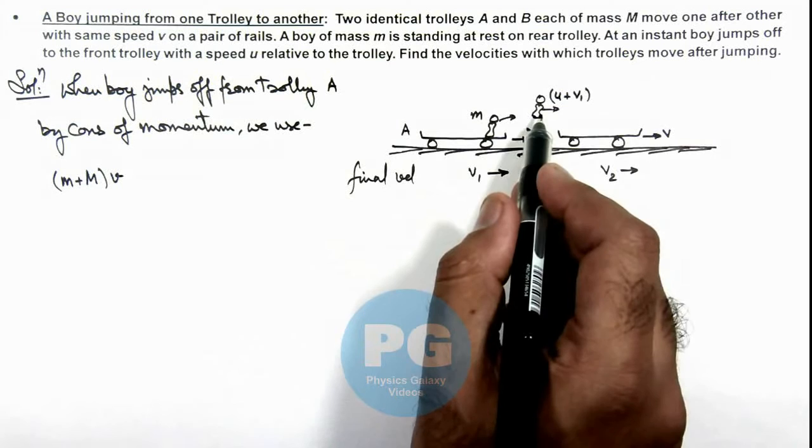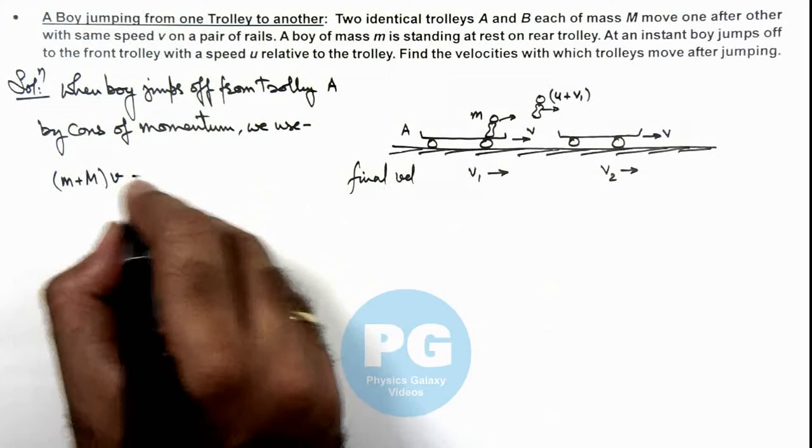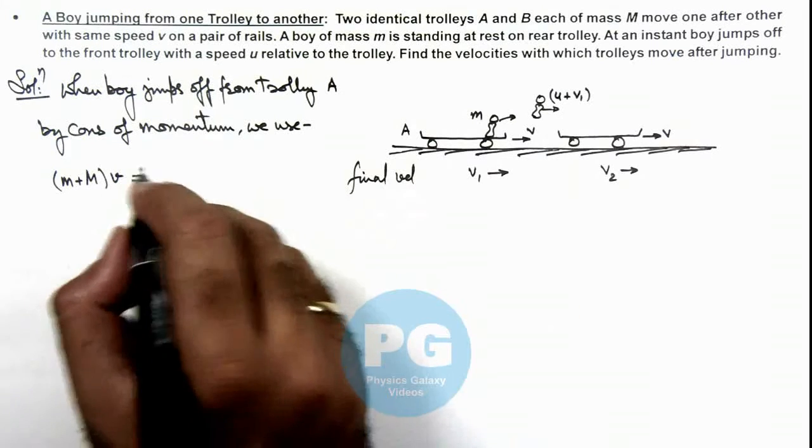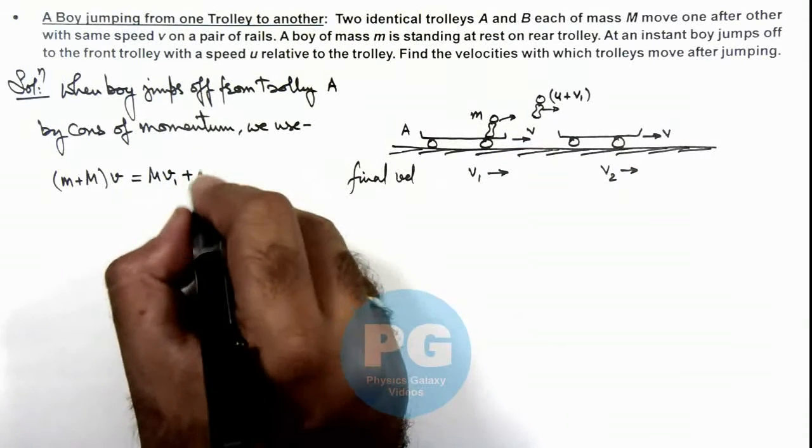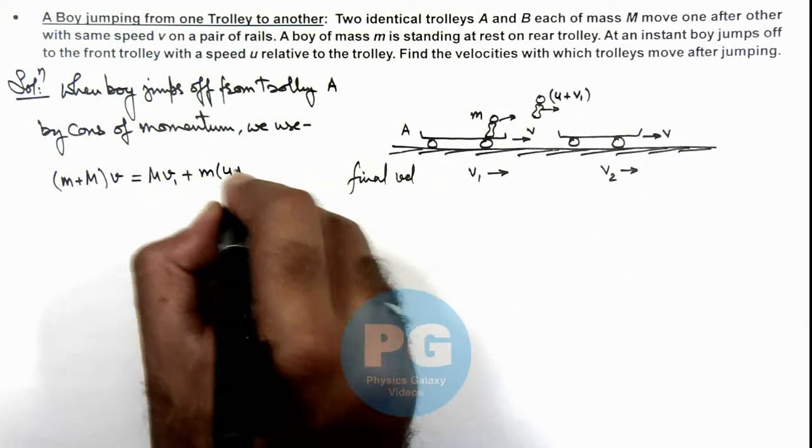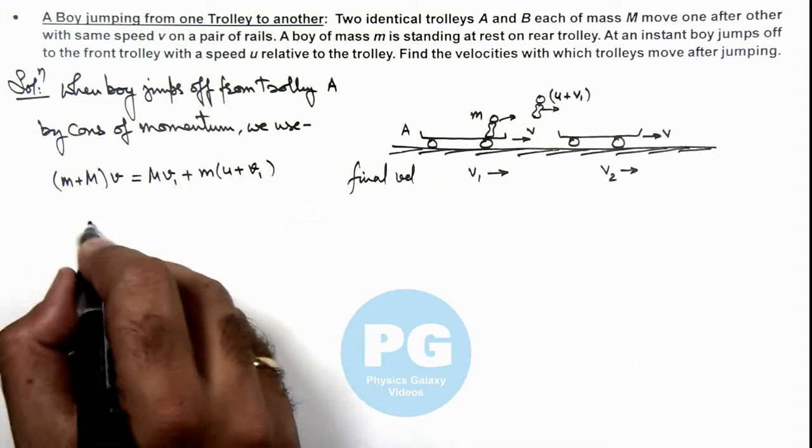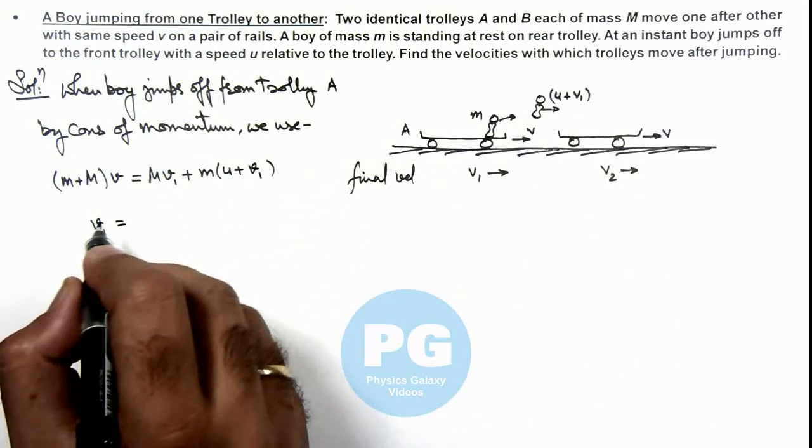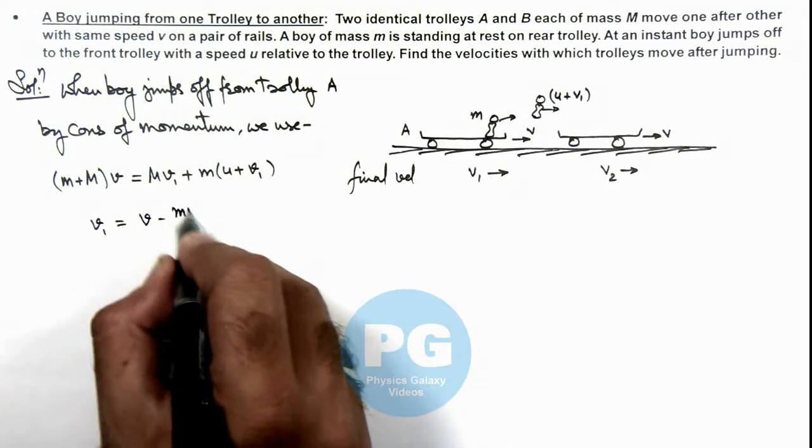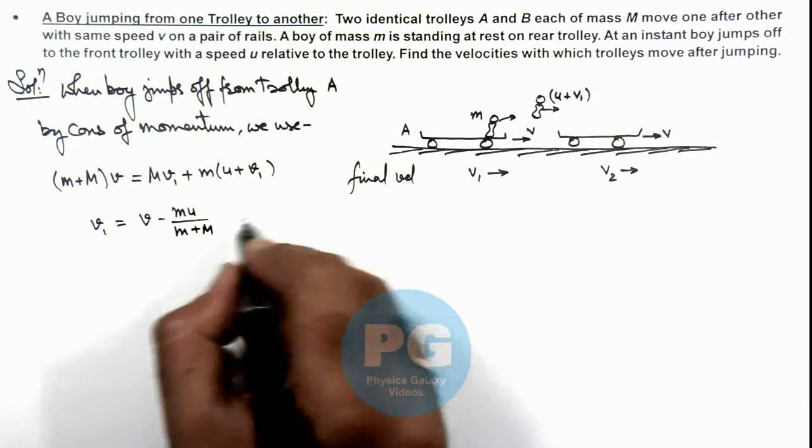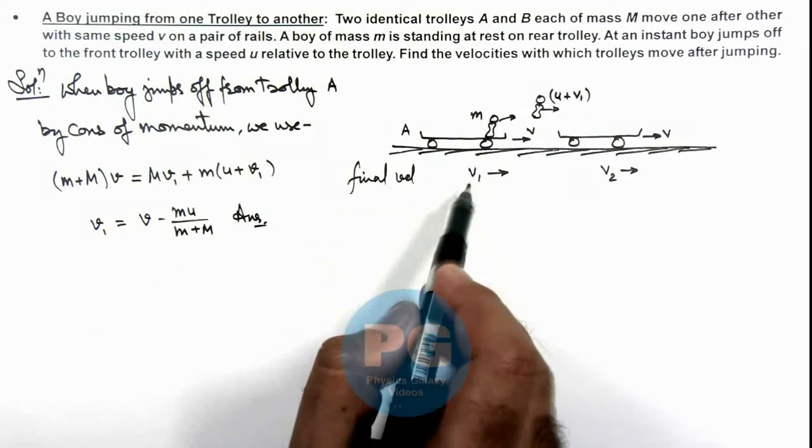After jumping off, the velocity of trolley changes to v₁. The final momentum of the system is Mv₁ plus the momentum of the boy, which is m(u + v₁). On simplifying, we get v₁ equals v minus mu/(m + M). This is one answer for the problem, the final velocity of trolley A.